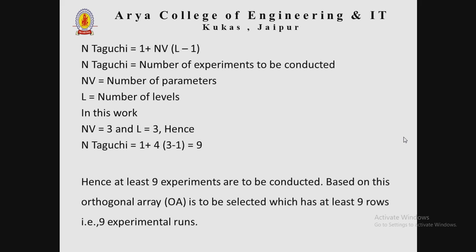In this example, N_v = 3 and L = 3. Therefore, N_Taguchi = 1 + 3 × (3 − 1) = 1 + 3 × 2 = 7... which gives at least 9 experiments to be conducted. Based on this, an orthogonal array (OA) must be selected with at least 9 rows, meaning 9 experimental runs.